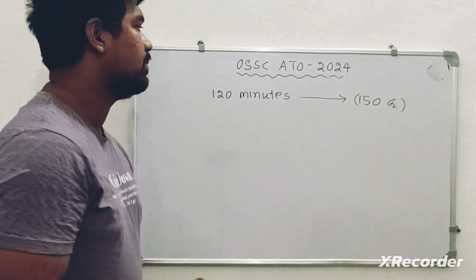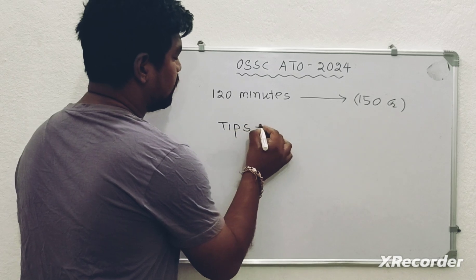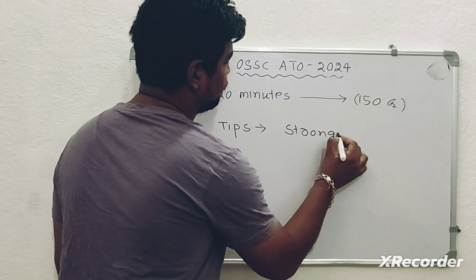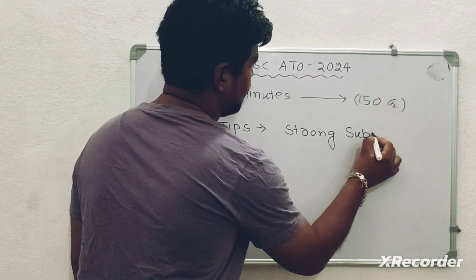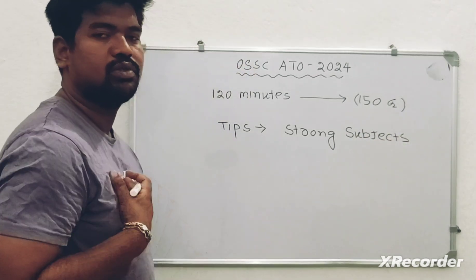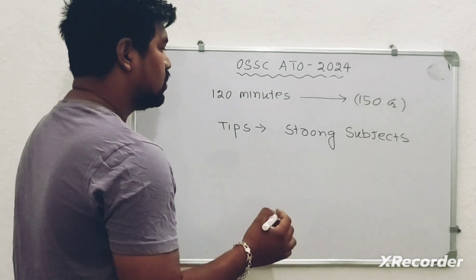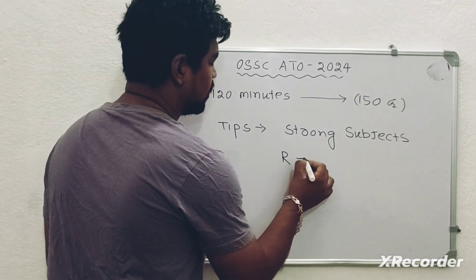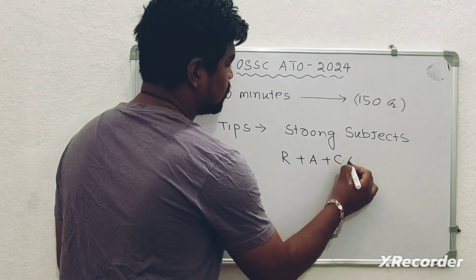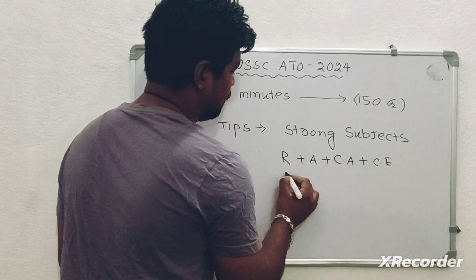If you have a strong subject, use it to your advantage. But if you have a weak area, you have to try Reasoning, Aptitude, Computer Application — identify your core strengths and weaknesses and practice those areas very well.